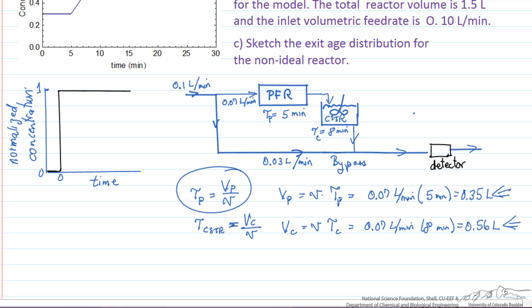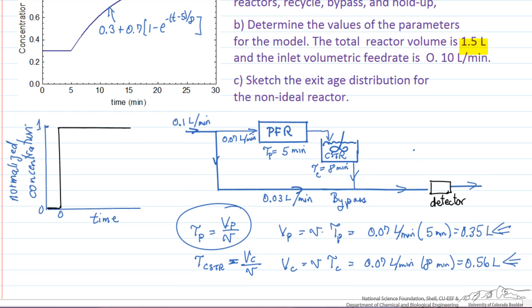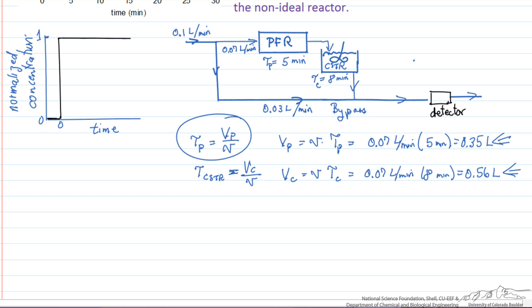Now our total volume is 1.5 liters, so that's the volume of the plug flow reactor plus the volume CSTR. The bypass we assume has no volume. That's not going to add up to 1.5 liters, which means we must have some holdup.